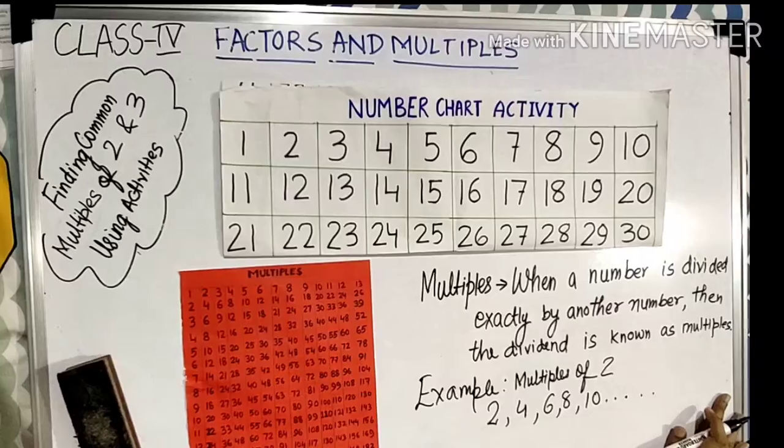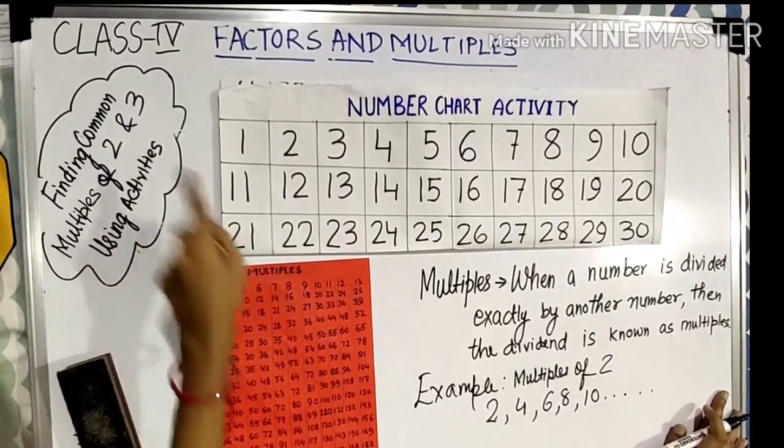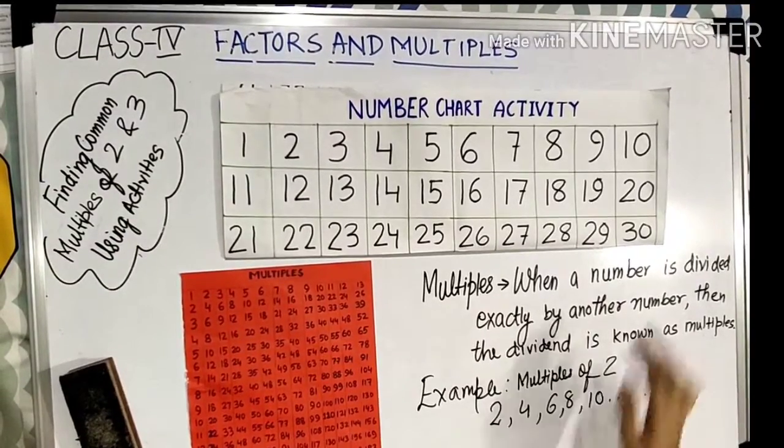Means there is no limit. Now let us find some common multiples of 2 and 3 till 30.